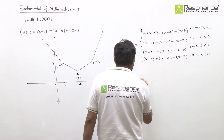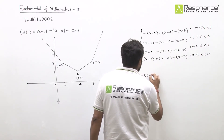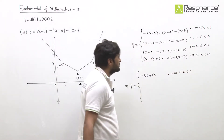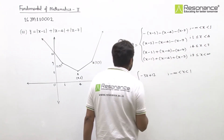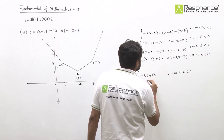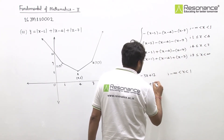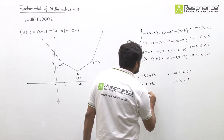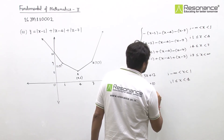In different intervals, y will be: for x less than 1, y = minus 3x plus 12; for x from 1 to 4, simplifying gives — x cancels partially — y = minus x plus 1 plus 4 plus 7 combined = minus x plus 10; for x from 4 to 7, y = x minus 1 minus(x minus 4) minus(x minus 7) = x plus two; for x from 7 to infinity, y = x minus 1 plus x minus 4 plus x minus 7 = 3x minus 12.